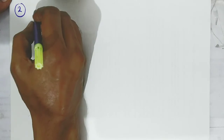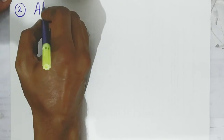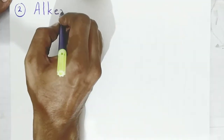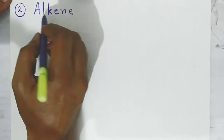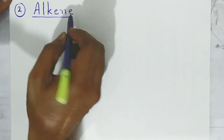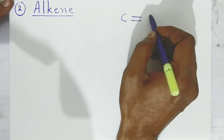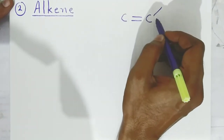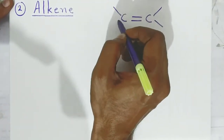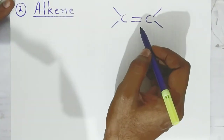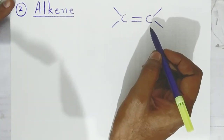The second functional group we will see is called alkene. This is very common. In the name alkene, 'ene' indicates a carbon-carbon double bond — between the carbons there will be a double bond.